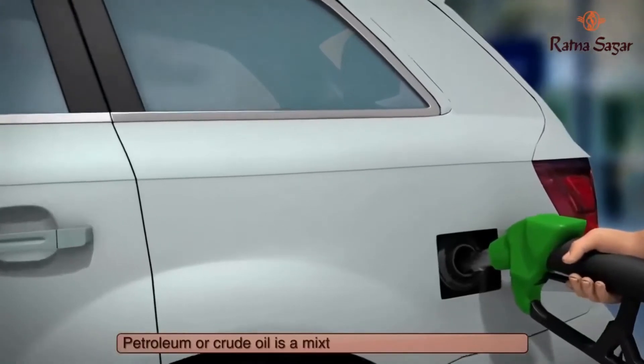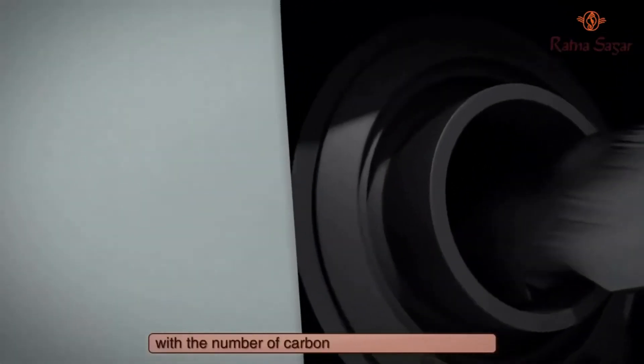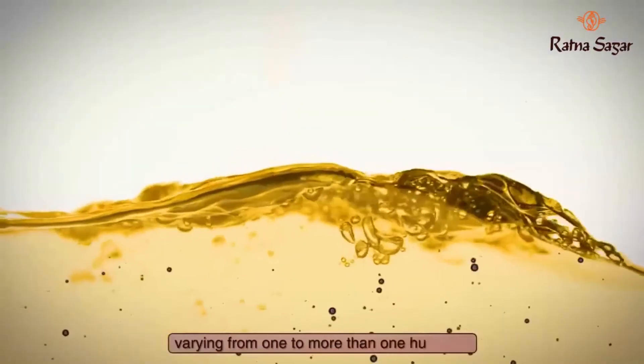Petroleum or crude oil is a mixture of several hydrocarbons with the number of carbon atoms in the molecules varying from 1 to more than 100.